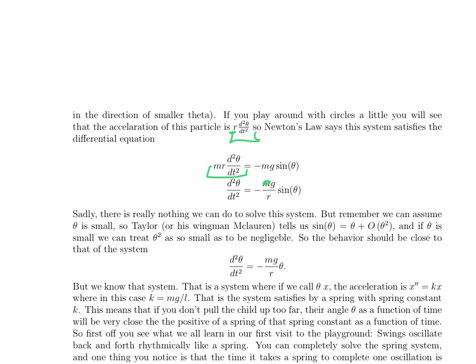And these m's cancel. So we get the second derivative of theta is equal to minus g over r times sin theta. And I think it's probably easier to change the name theta to x, so you can see what this looks like. That's a great equation that describes the system. And it's hopeless. We can't solve that equation.